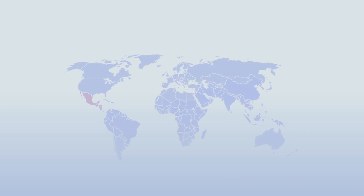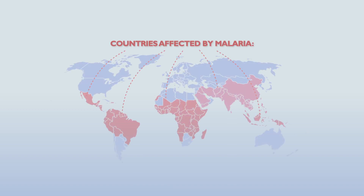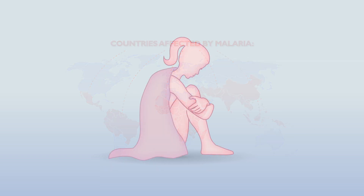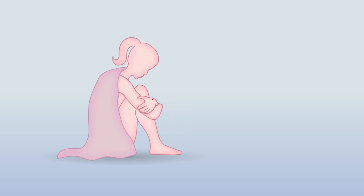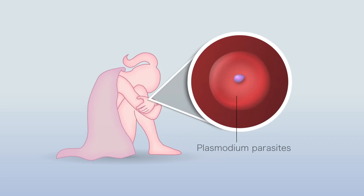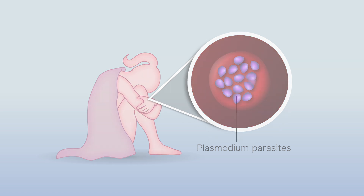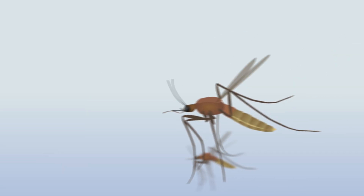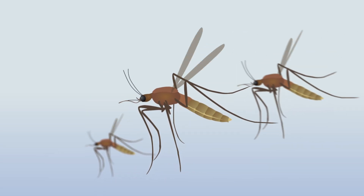Malaria is a deadly disease that affects more than 200 million people annually, resulting in almost half a million deaths each year. This disease is caused by Plasmodium parasites, which cause extremely high fevers and shaking chills by infecting and reproducing inside human red blood cells. The parasites are transmitted between humans by mosquitoes.